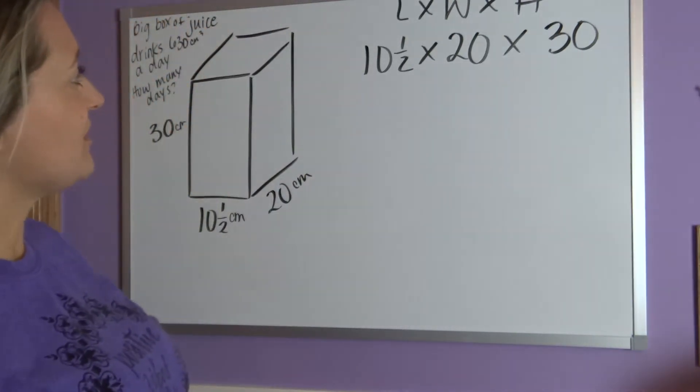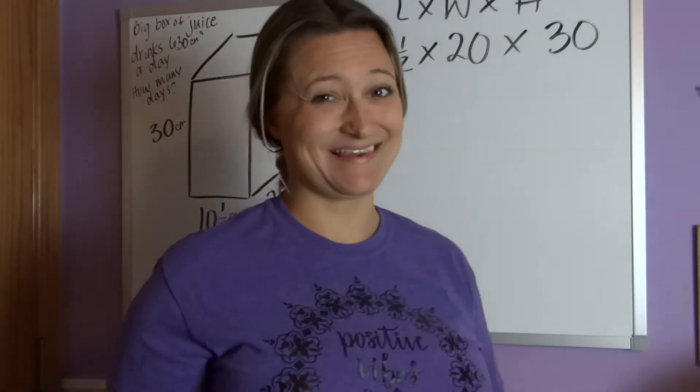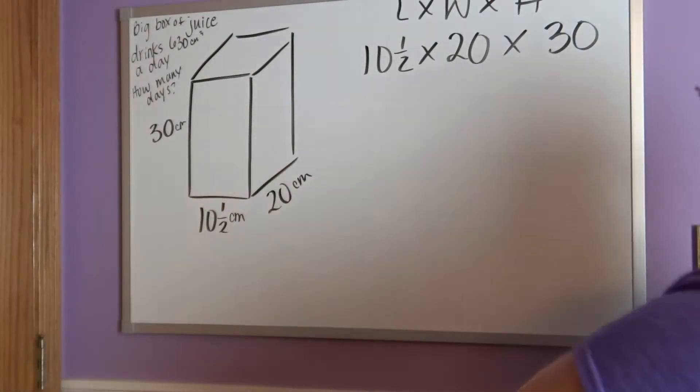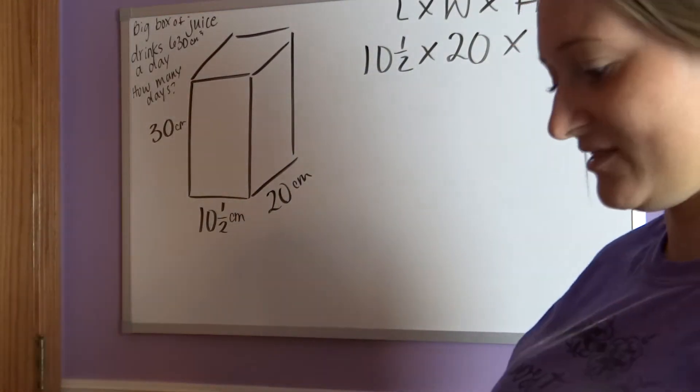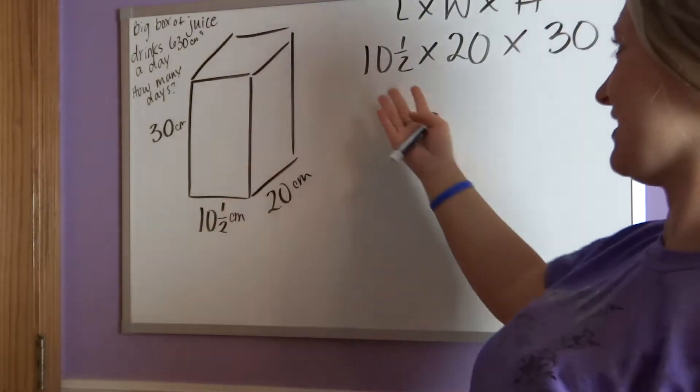Okay, so then, now we need to multiply those three numbers. And the nice part about Khan Academy is they have a calculator. So if you were to start multiplying this in a calculator, when you think of, well, what is 10 and a half?